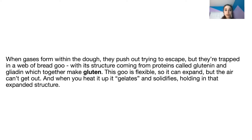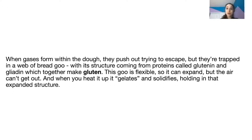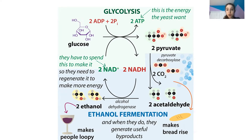This flexible network can expand if gas forms inside it, because gas molecules have a lot of energy and try to escape and move away from one another. When this happens inside your dough, the gas is trapped, but the flexible gluten network allows the dough to expand. We call this process leavening, and it can happen in different ways depending on how the gas is formed — including biological ways, like fermentation, which is how we get leavening from yeast.